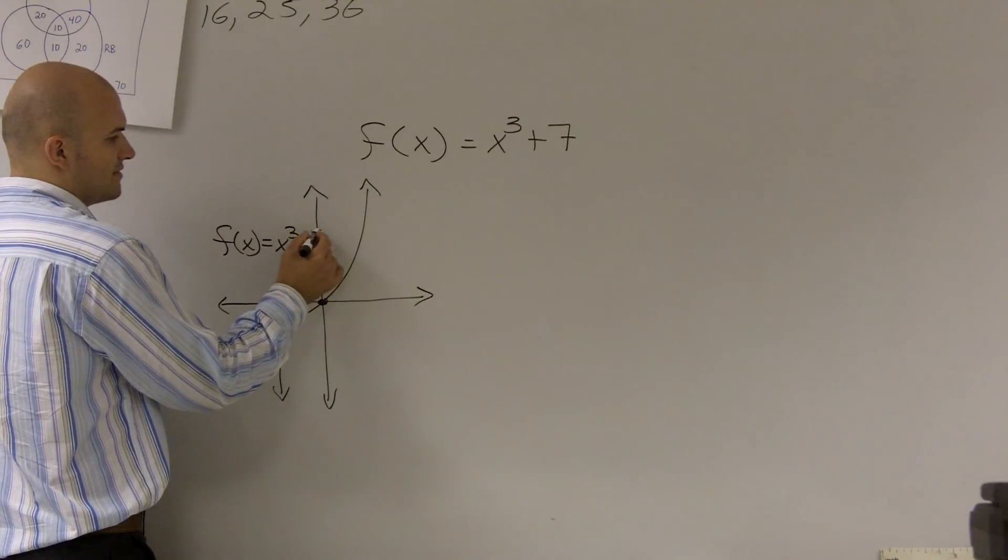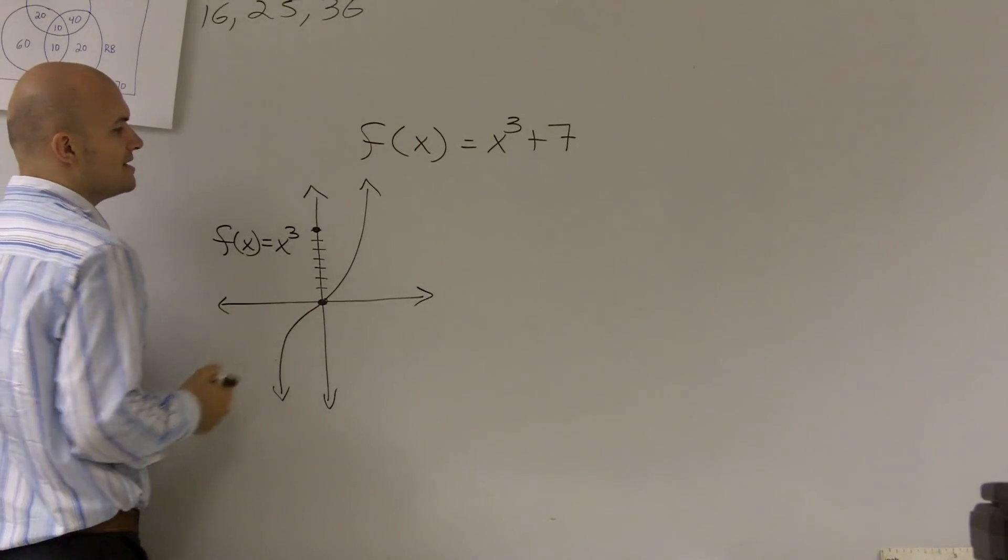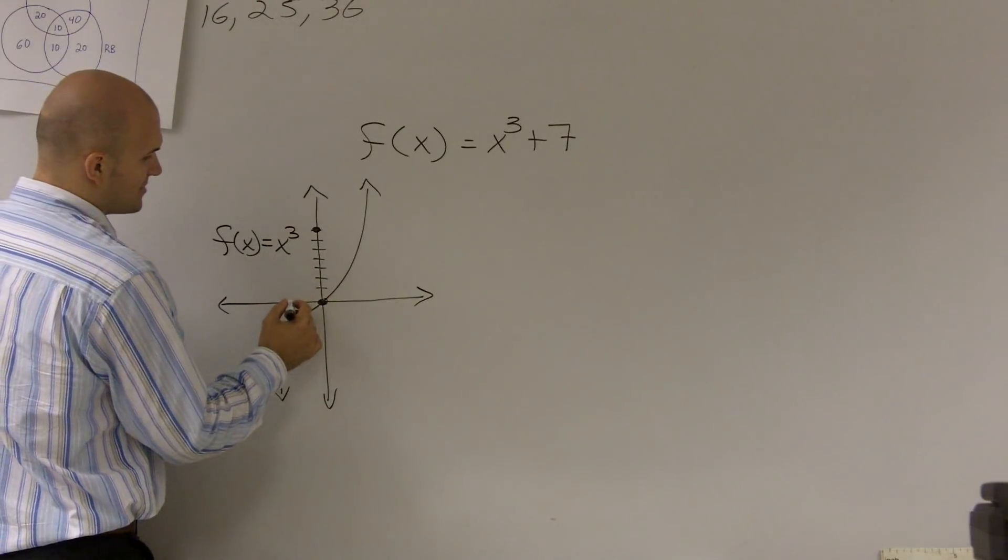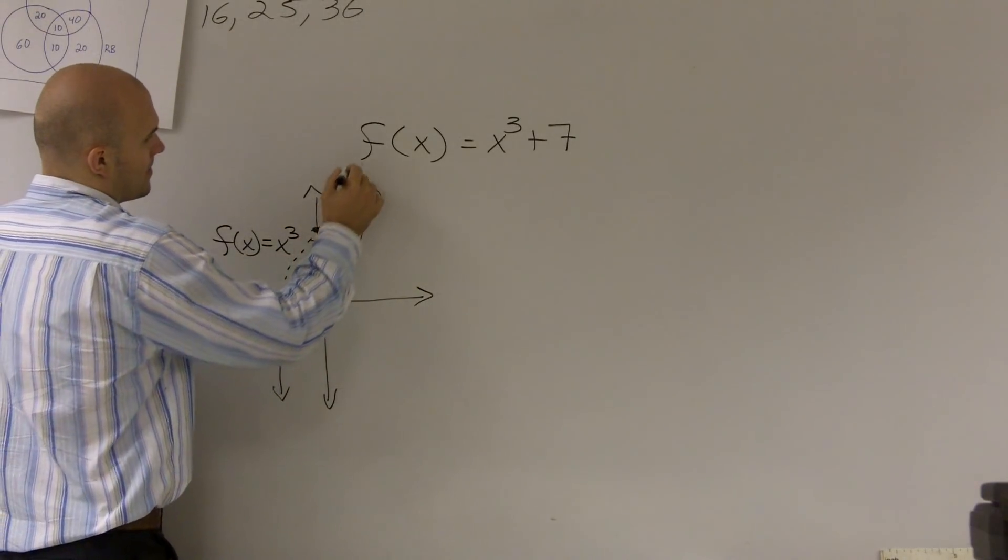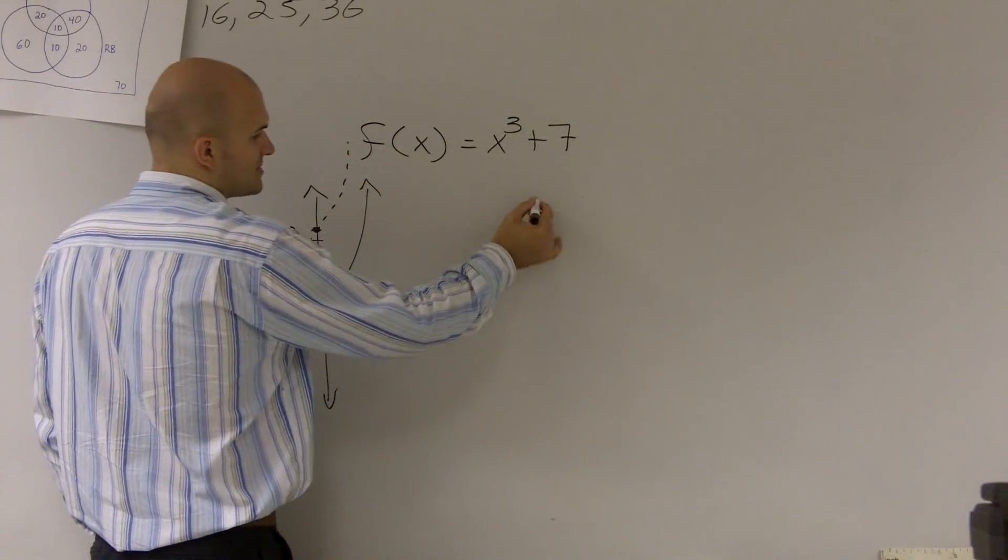1, 2, 3, 4, 5, 6, 7. So it's going to be the exact same graph, except it's now going to be shifted up 7 units.